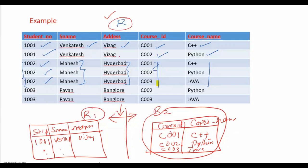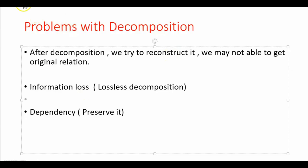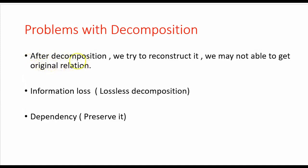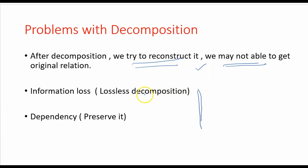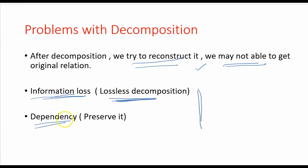There are problems with decomposition. After decomposing a relation into several relations, when we reconstruct or combine them, we may not get the original relation — that is one basic problem. Two important things to consider: first, there is a chance of information loss, so we need to perform lossless decomposition. Second, we need to preserve dependencies.